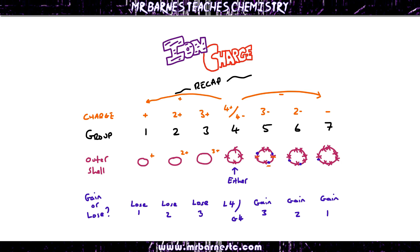You can look at any element — for example, magnesium, which is in group 2, will therefore always be 2+. If you had sulfur, it's in group 6, so it's always going to be 2−, and so on.